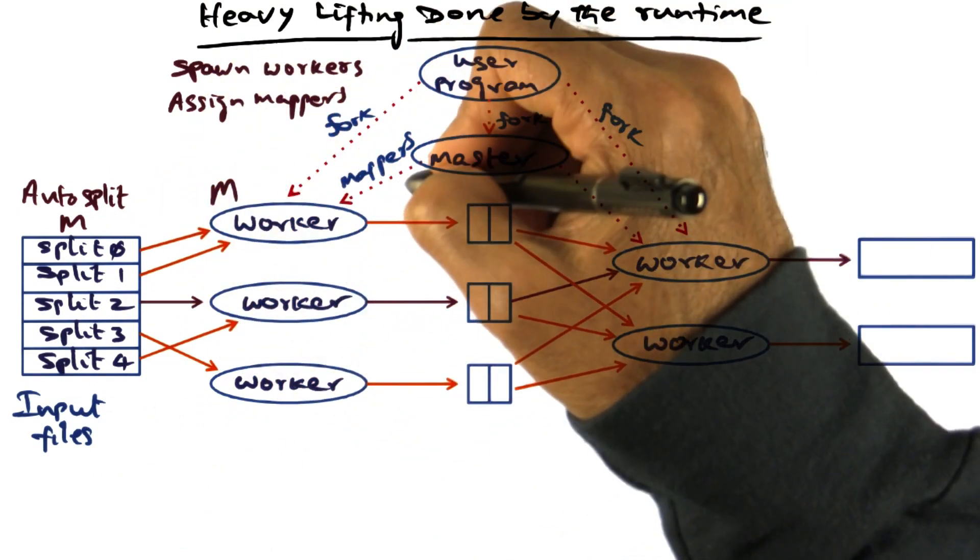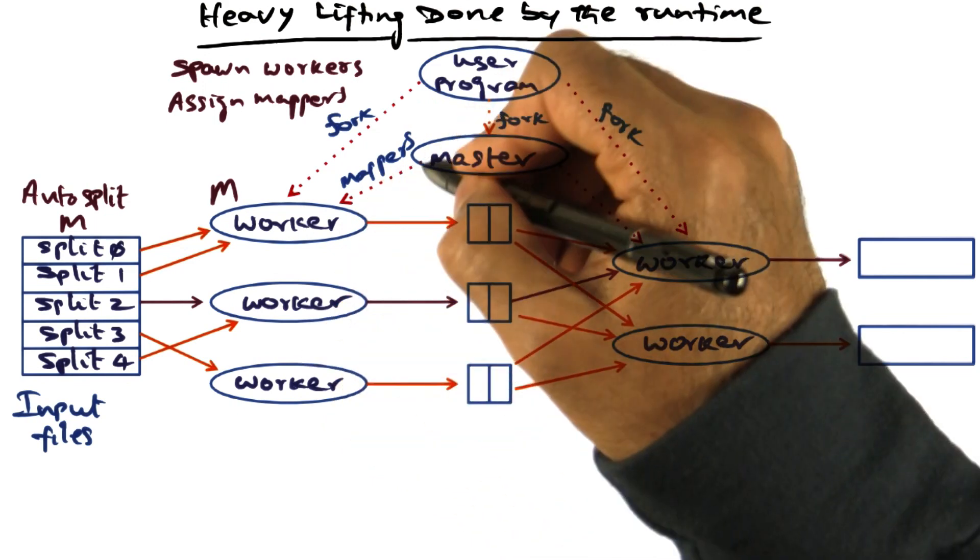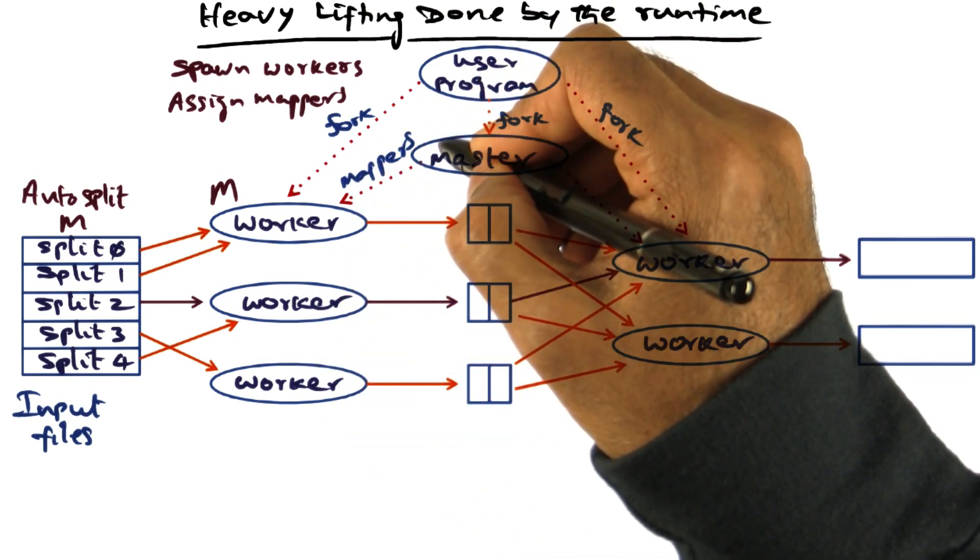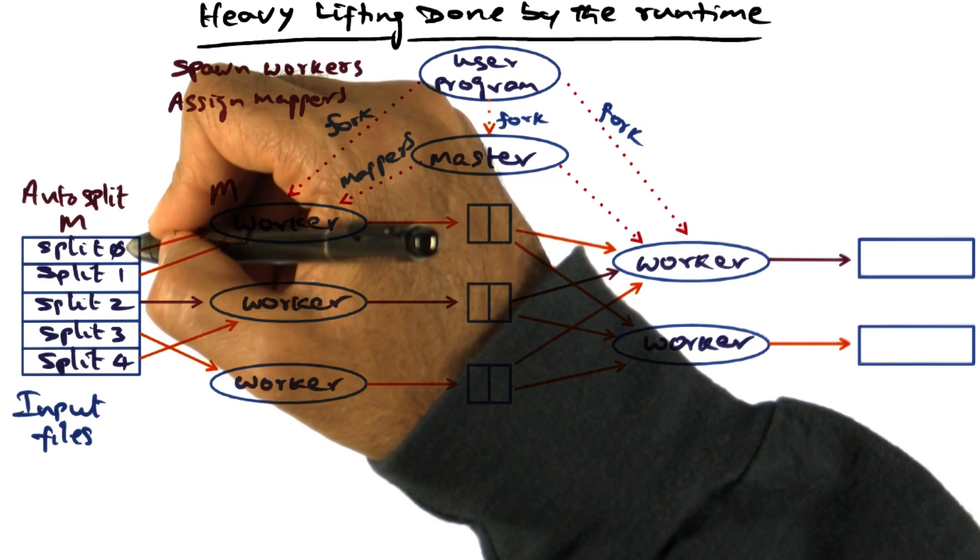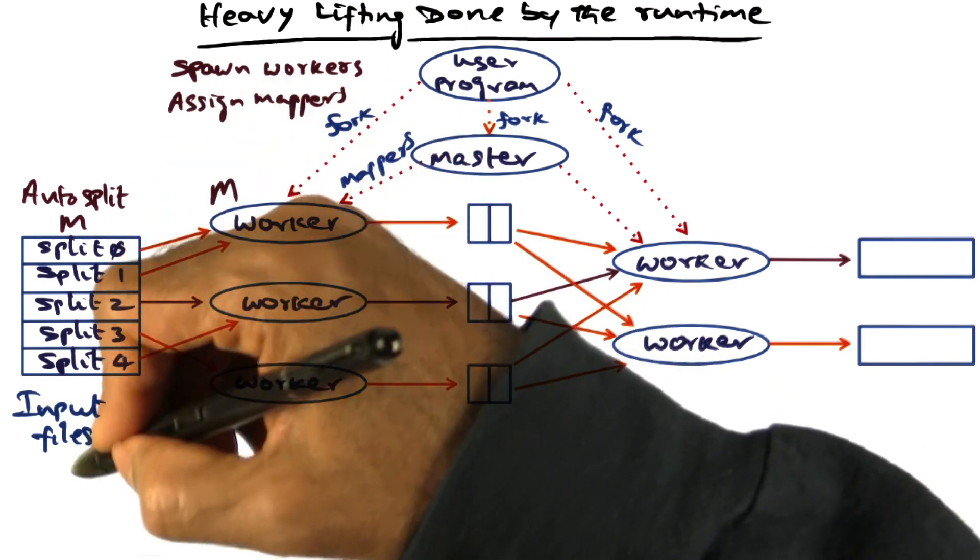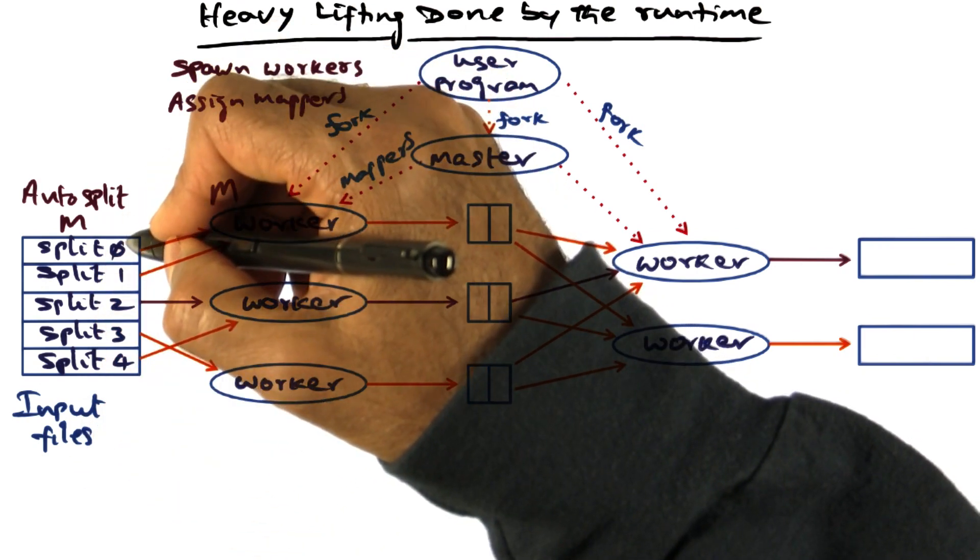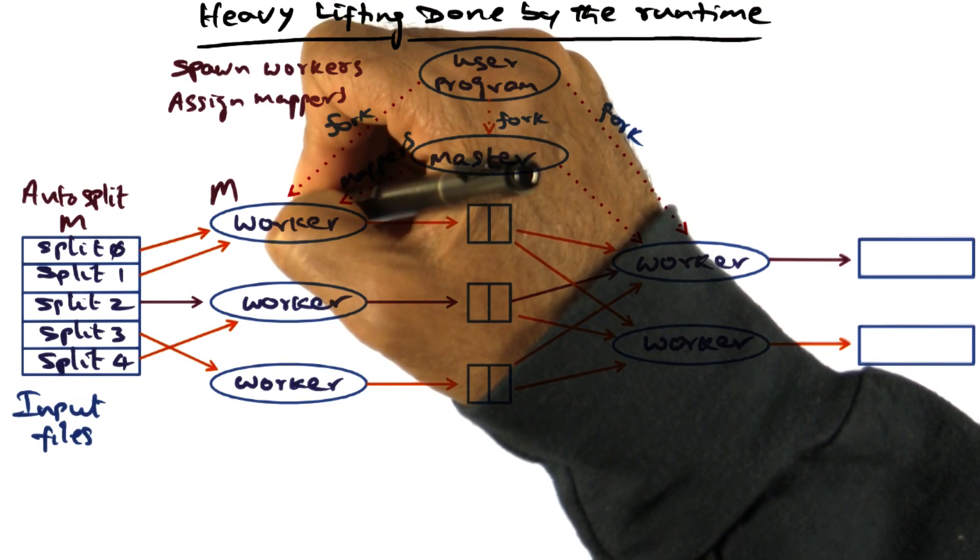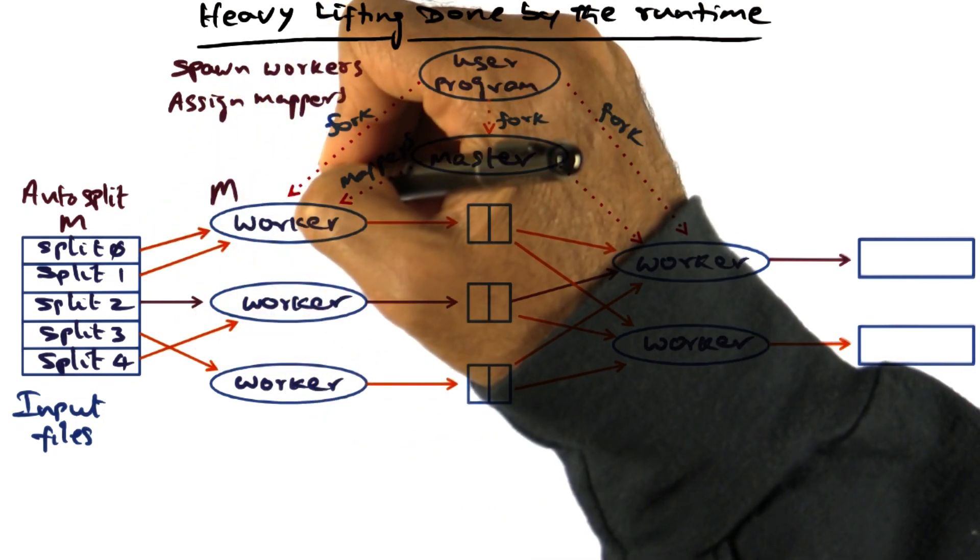So there are m splits, then m worker threads are going to be assigned to mapping function. Each worker thread is going to take one portion of the input file split and apply the map function on that particular input split.